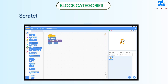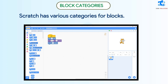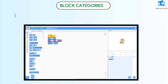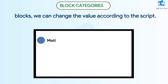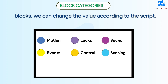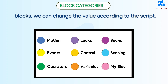Scratch has various categories for blocks. In these blocks, we can change the value according to the script. The categories are: Motion, Looks, Sound, Events, Control, Sensing, Operators, Variables, and My Blocks.